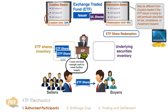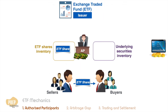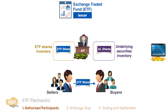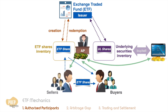Likewise, there is a minimum lot size of 50,000 shares. For the redemption of 50,000 ETF shares, the AP receives the basket of securities, which it can choose to sell to raise cash. As you can see, the AP balances its inventory of ETF shares, underlying securities, and cash according to the anticipated demand and supply of ETF shares.